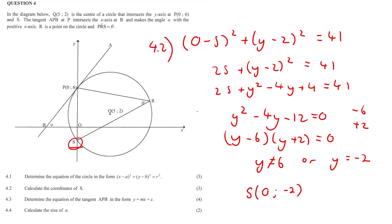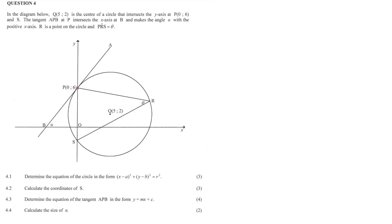Question 4.3, determine the equation of the tangent APB in the form y equals mx plus c. I'm just going to erase the screen quickly with some jick. So firstly, let's get the gradient of PQ, because the product of two lines that are perpendicular will give you negative 1.